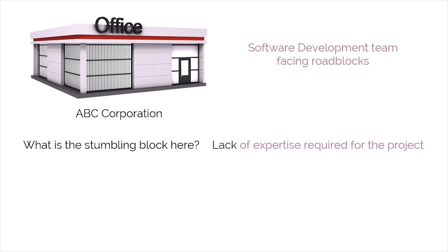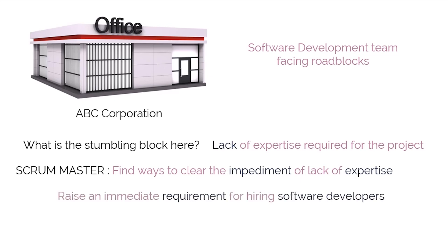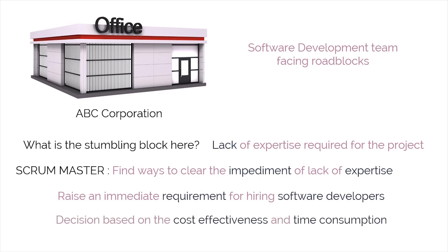This is where the Scrum master steps in. The task of the Scrum master will be to find ways to clear the impediment — the lack of required expertise. The Scrum master will either raise an immediate requirement for hiring software developers with the required expertise, or make an arrangement for training the existing staff, making a decision based on cost-effectiveness and time consumption.